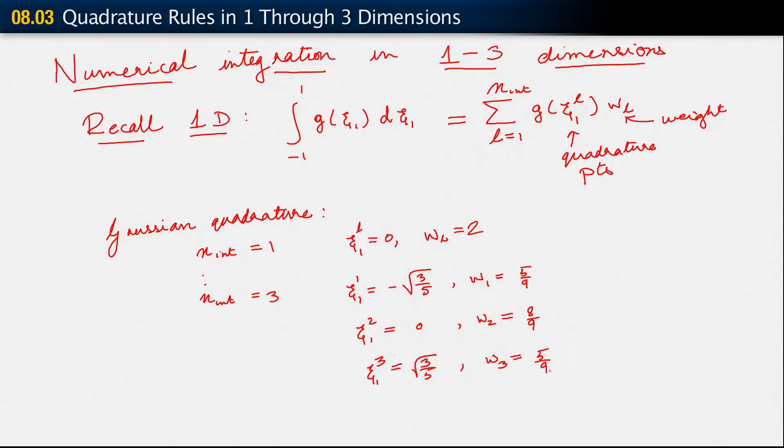And we saw that Gaussian quadrature said that a rule of, that an nint rule, or an nint point rule, integrates a polynomial of order 2nint minus 1 exactly. So we recall all of this.